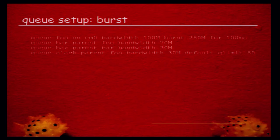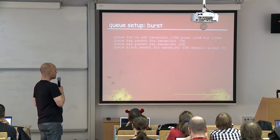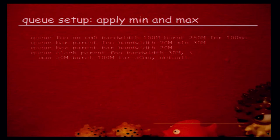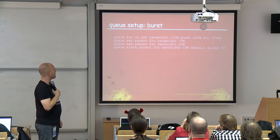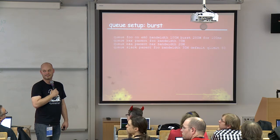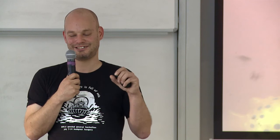You can limit the maximum number of packets in a queue with a queue limit. You can specify burst time and burst bandwidth — for example, 100 Mbit on average but 250 Mbit allowed for 100 milliseconds. You can apply minimum and maximum bandwidths: a maximum of 50 Mbit but allowed to burst to 100 Mbit for 50 milliseconds, averaging 30 Mbit. The burst resets once the queue becomes idle — figuring that out is not as simple as looking at queue length, but essentially once you go back to idle you're allowed to burst again.